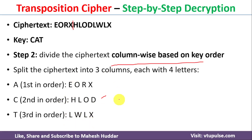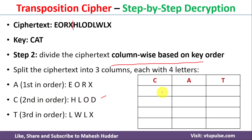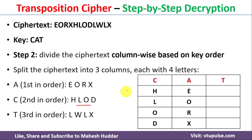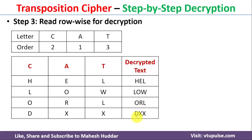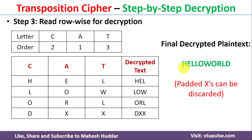Once we divide the cipher text, we write those letters column-wise. For A we write E-O-R-X, for C we write H-L-O-D, and for T we write L-W-L-X. Once the letters are written column-wise, we read them row-wise to decrypt the message. Reading row-wise gives us: first row H-E-L, second row L-O-W, third row O-R-L, and the last row D-X-X. Concatenating all rows gives us the plain text 'hello world'.